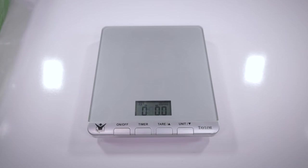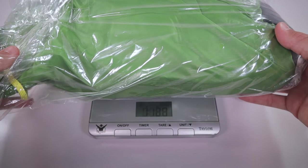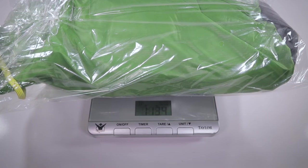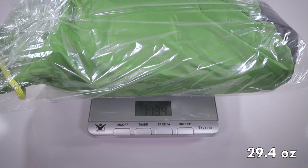According to the specs on the Six Moon Designs website, the Skyscape Trekker model is supposed to be 28 ounces or 790 grams. So we've got our scale zeroed out here, I'm going to go ahead and put this right on top there and see what we get. Let's see here, I can't really tell, one pound 13.4 ounces.